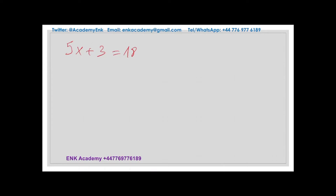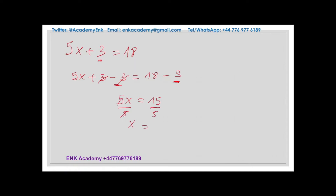We are required to solve the equation to find the value of x. We want to isolate x to stay on one side. The first step is to remove 3 on both sides, so we will have 5x plus 3 minus 3 equal to 18 minus 3. Those ones cancel each other. We then have 5x equal to 15. We can now divide by 5 on both sides, giving us x equal to 15 divided by 5, which is 3. The solution for this equation is x equal to 3.